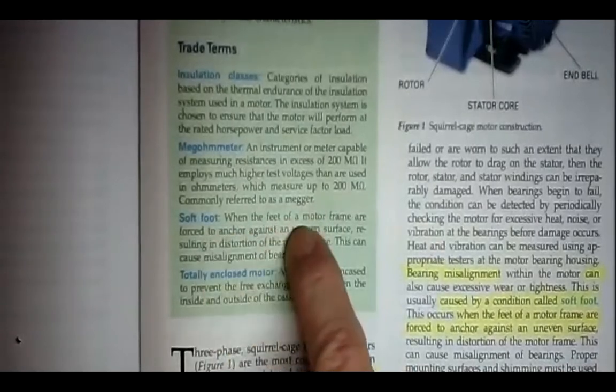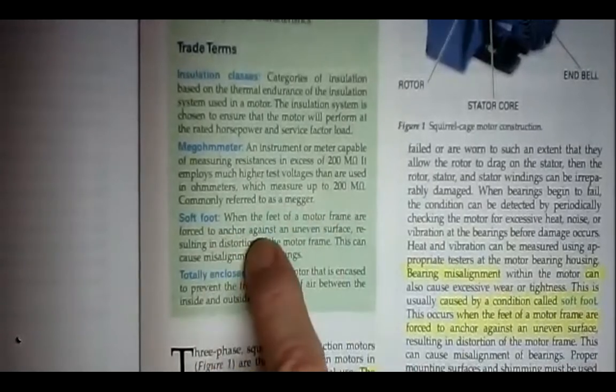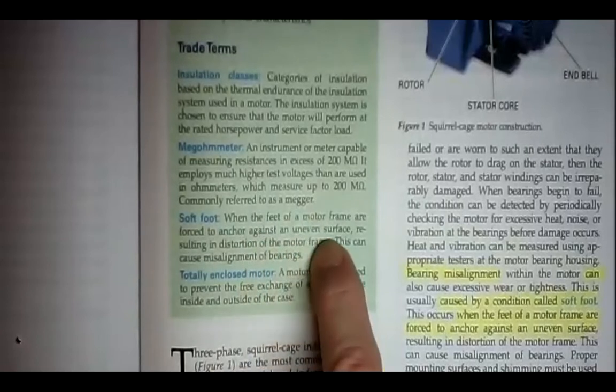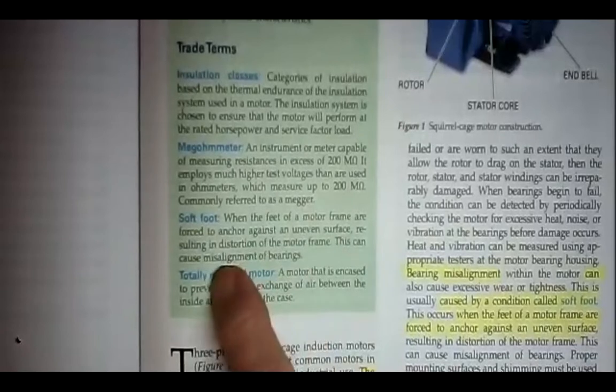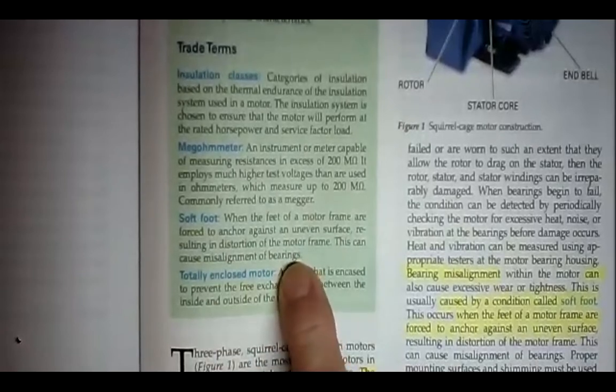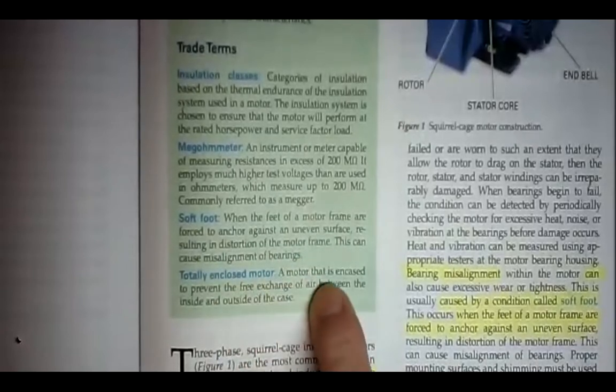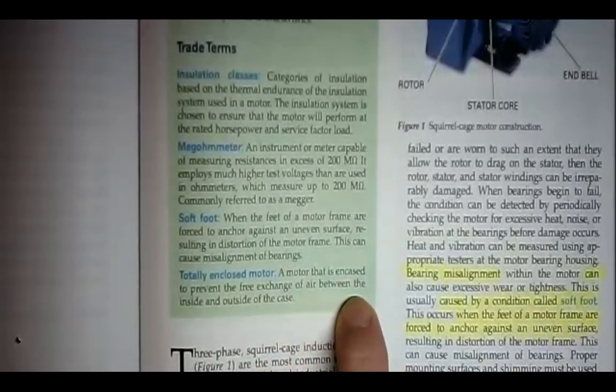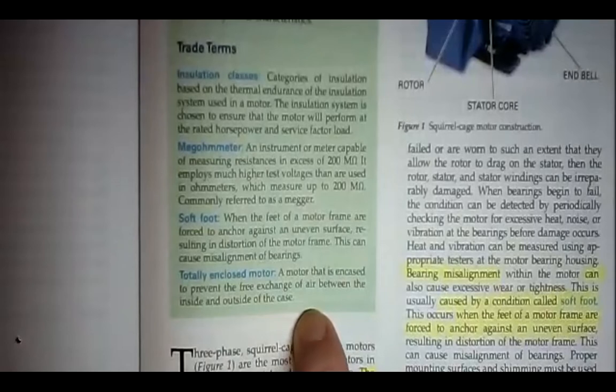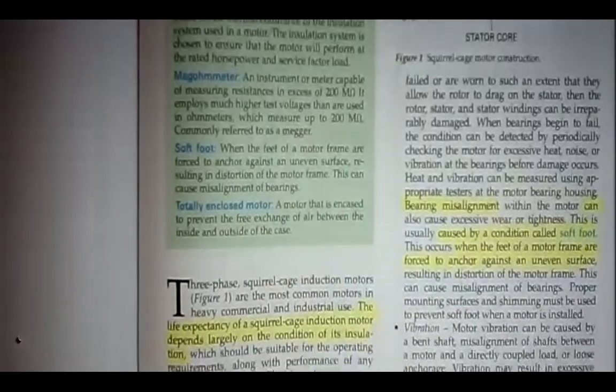Soft footing. When the feet of a motor frame are forced to anchor against an uneven surface resulting in distortion of the motor frame, this can cause misalignment of the bearings. Totally enclosed motor is a motor that is encased to prevent the free exchange of air between the inside and outside of the case. Sometimes they call it hermetically sealed.